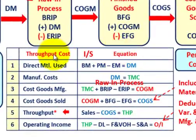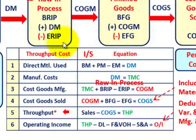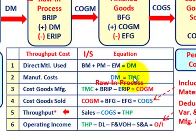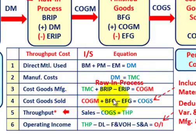Now let's look at determining operating income — essentially the income statement for throughput costing. There are six steps. First, direct material used: beginning materials on hand plus purchased materials for the period minus ending materials on hand. That gives direct material used. Manufacturing costs equal only those direct materials used, which equals total manufacturing cost. Cost of goods manufactured is total manufacturing cost plus beginning raw in process minus ending raw in process. Cost of goods sold is cost of goods manufactured plus beginning finished goods minus ending finished goods.